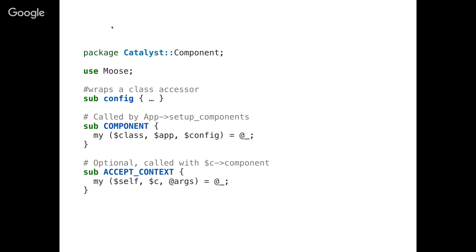What is config? Config is a class accessor that returns a hash ref of the configuration information associated with the component. When you defer the creation of a component to the application, the configuration for it is stored there. As a result, we have a configuration method inside a component. It's best when you're working with a model or a component that you don't call this method yourself directly.